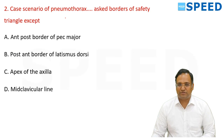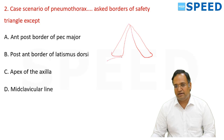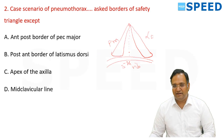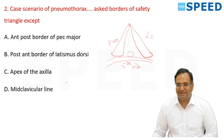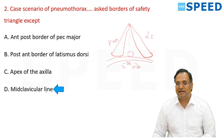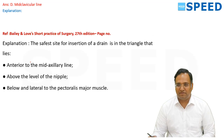Question 2 involved a pneumothorax case scenario asking about the boundaries of safety — the triangle of safety. It is bounded anteriorly by pectoralis major, posteriorly by latissimus dorsi, and below by the superior border of the fifth rib. The apex corresponds approximately to the mid-axillary line, which is the ideal placement for ICD insertion along the superior border of the rib. The exception among the options is mid-clavicular line, as explained in Bailey and Love.